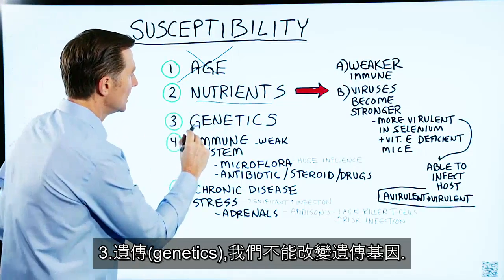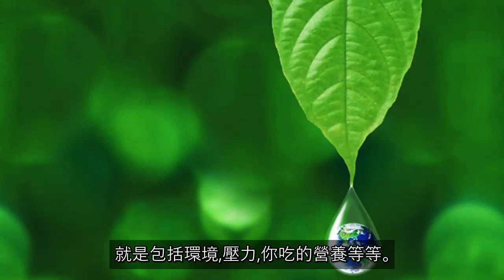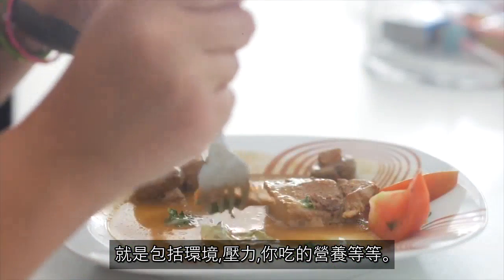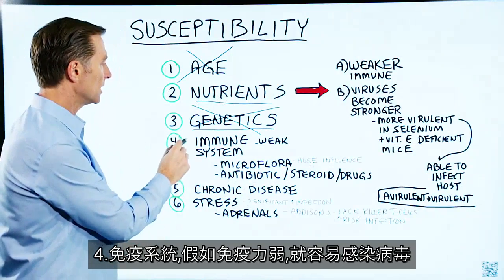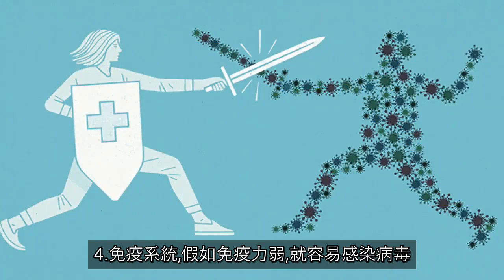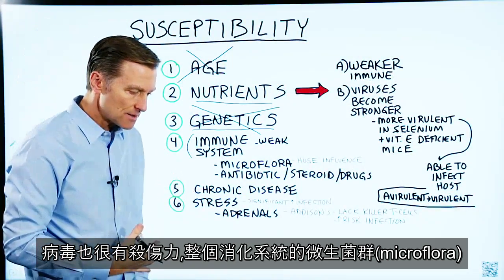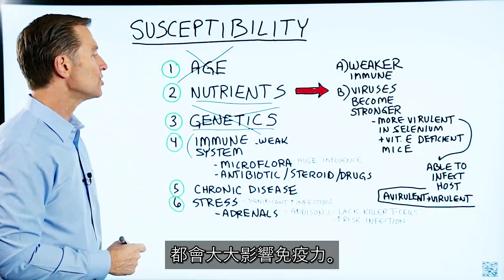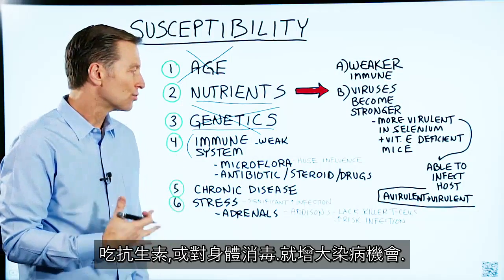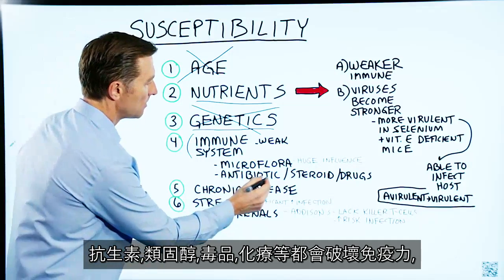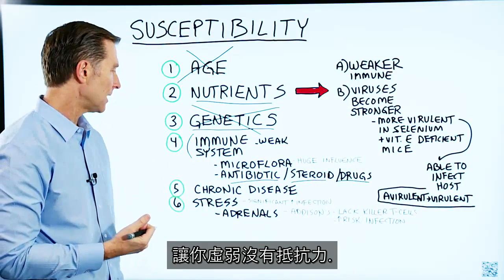Genetics — you can't do much about your genes, though you can influence epigenetics through your environment, stress, and nutrition. Number four: the health of your immune system. If your immune system is weak, you're more vulnerable to the virus and more likely to suffer greater destruction. The microflora in your digestive system has a huge influence on your immune system. When you take antibiotics or sterilize the body, you greatly increase the chance of getting infections. Antibiotics, steroids, drugs, and chemotherapy all break down your immune system. If you have a preexisting chronic disease, that also makes you susceptible.